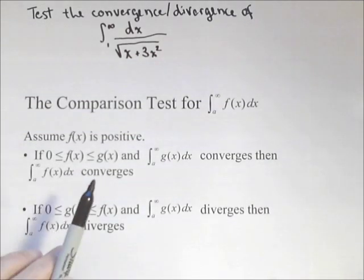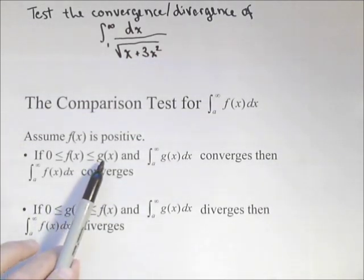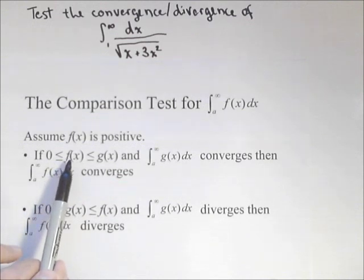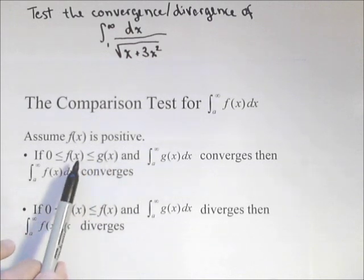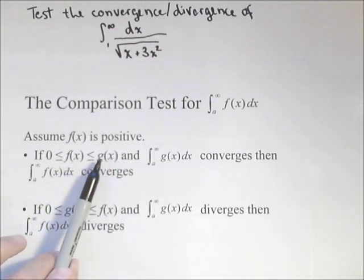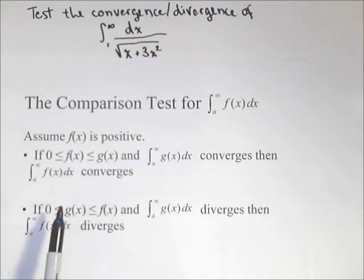Basically it says if we have a function that we know converges, and we can show another function—if we have an improper integral that we know converges, and we can show that the integrand is less than the integrand of the one we know converges, then it converges. Vice versa.